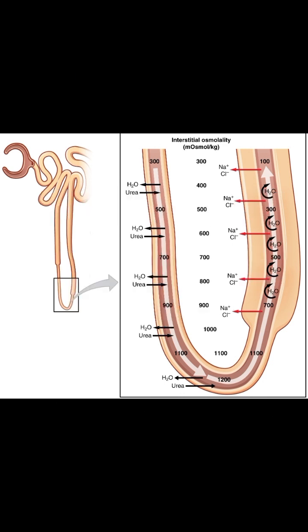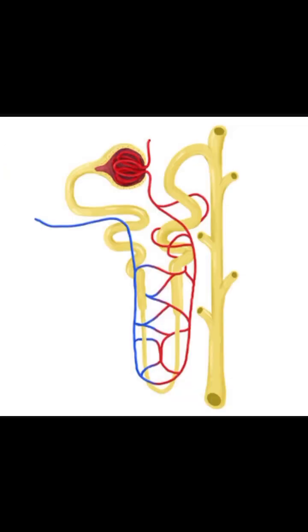Please don't mistake the countercurrent mechanism and the countercurrent exchanger. The countercurrent mechanism takes place in the loop of Henle, while the countercurrent exchanger takes place in the vasa recta, which is the blood vessel that follows the loop of Henle.